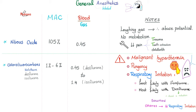General anesthetics: nitrous oxide on one hand and chlorofluorocarbons on the other — halothane, desflurane, isoflurane, enflurane, sevoflurane, etc. Each has a MAC and a blood-to-gas ratio. The higher the MAC, the lower the potency. A low blood-to-gas ratio means quick recovery. Nitrous oxide is the laughing gas — no metabolism, used in trauma, tooth extraction, and childbirth. Chlorofluorocarbons can lead to malignant hyperthermia. Pungency and respiratory irritation are most likely with desflurane and least likely with sevoflurane.